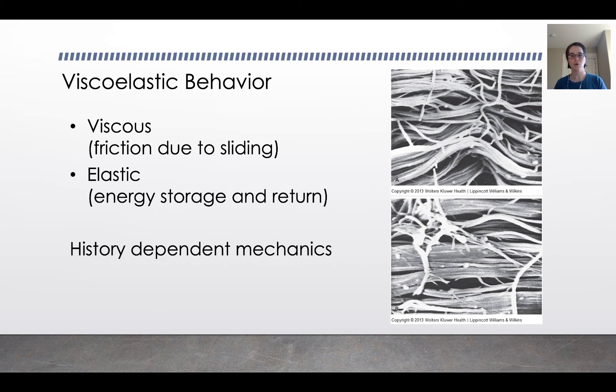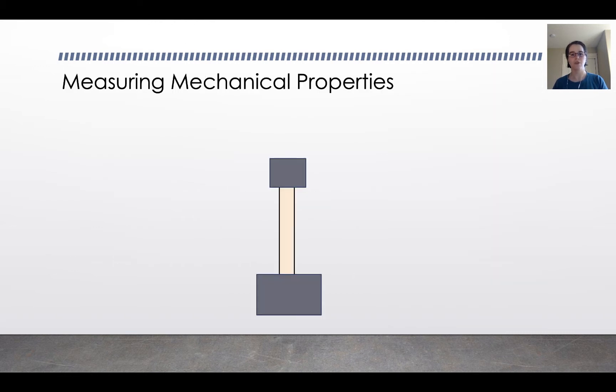To describe the ways that a viscoelastic material like tendon or ligament is characterized, we're going to look at a couple of key parameters. But first we're going to think about how we measure mechanical properties of a tendon. Here's a tendon. It's in clamps for a mechanical testing system like an MTS, and we're going to apply a force to it to measure its properties in tension.